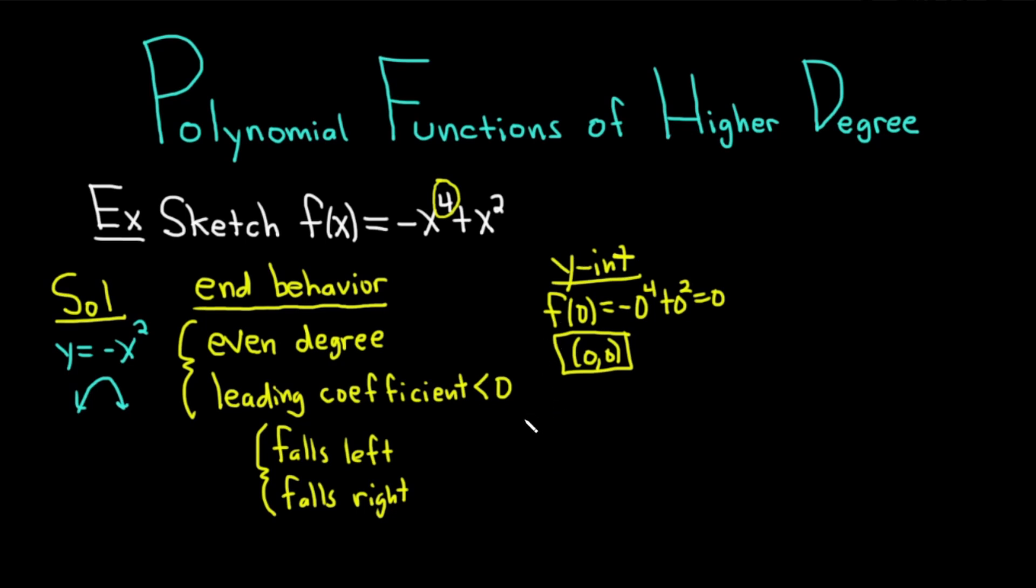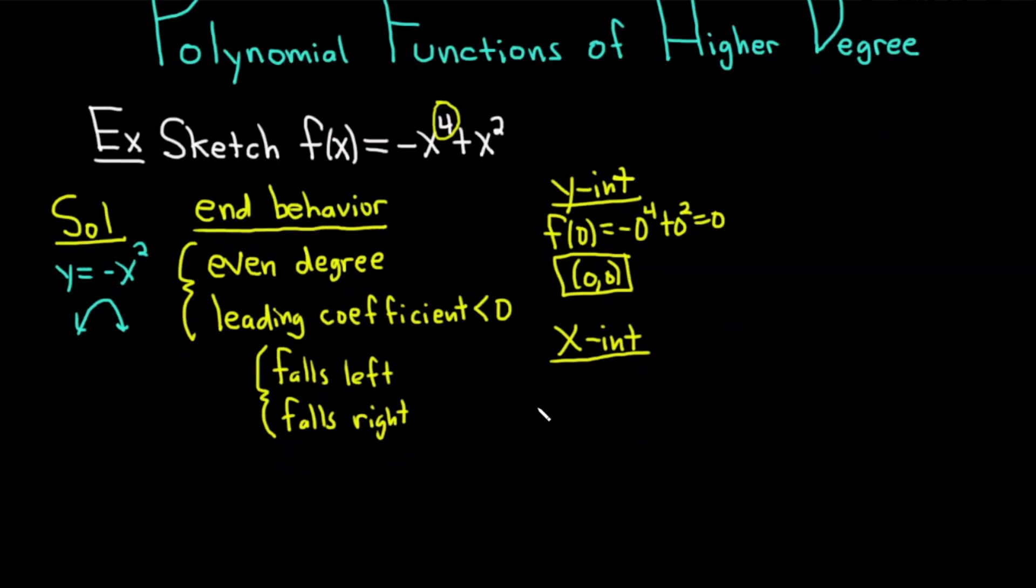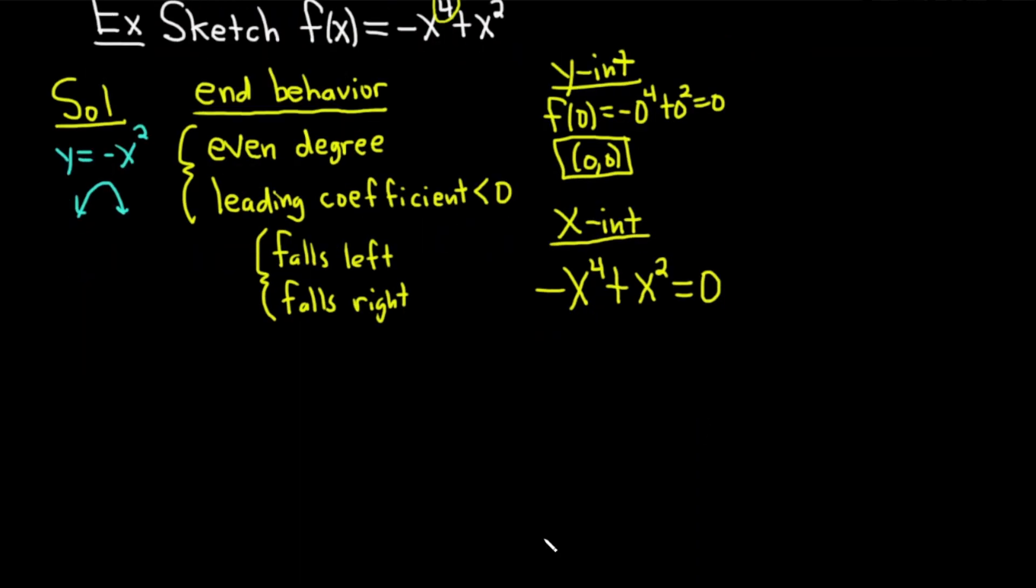The interesting part comes when we try to find the x-intercepts. To find the x-intercepts, we take our entire function and we set it equal to 0. So we take negative x to the 4th, plus x squared, and we set it equal to 0. And now we have to solve for x. You notice that it has a common factor of x squared. But we can do even better. We can pull out a negative x squared to get rid of this annoying negative.